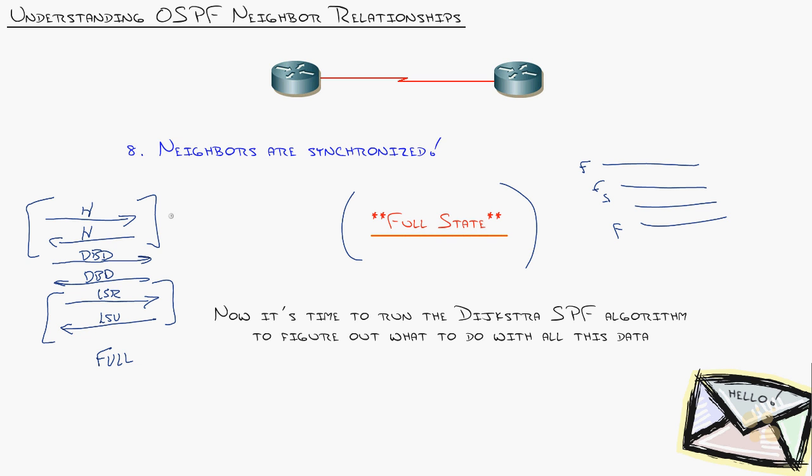Each state has a name. When initializing neighbors after sending hello messages, they're in init state. Once they realize they can be neighbors, they briefly go to ex-start while picking the master-slave relationship. Then they enter exchange state. You'll see these states in debug messages. After exchange, they enter loading state while doing LSR and LSU exchanges, loading the database between each other. Then they reach full state. This knowledge separates the normal network engineer from the excellent one. You can turn on debug IP OSPF neighbors and see where it hangs up, then troubleshoot from there.